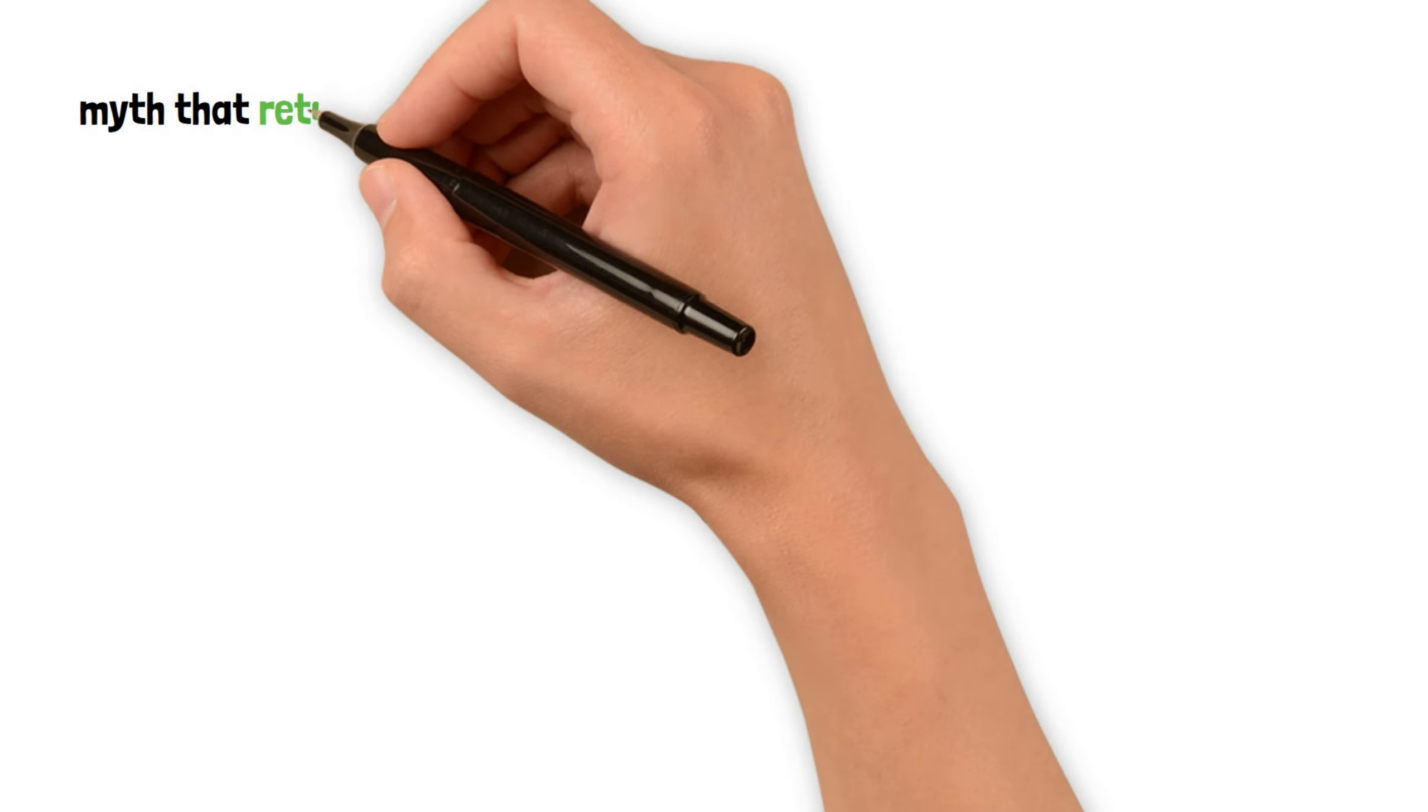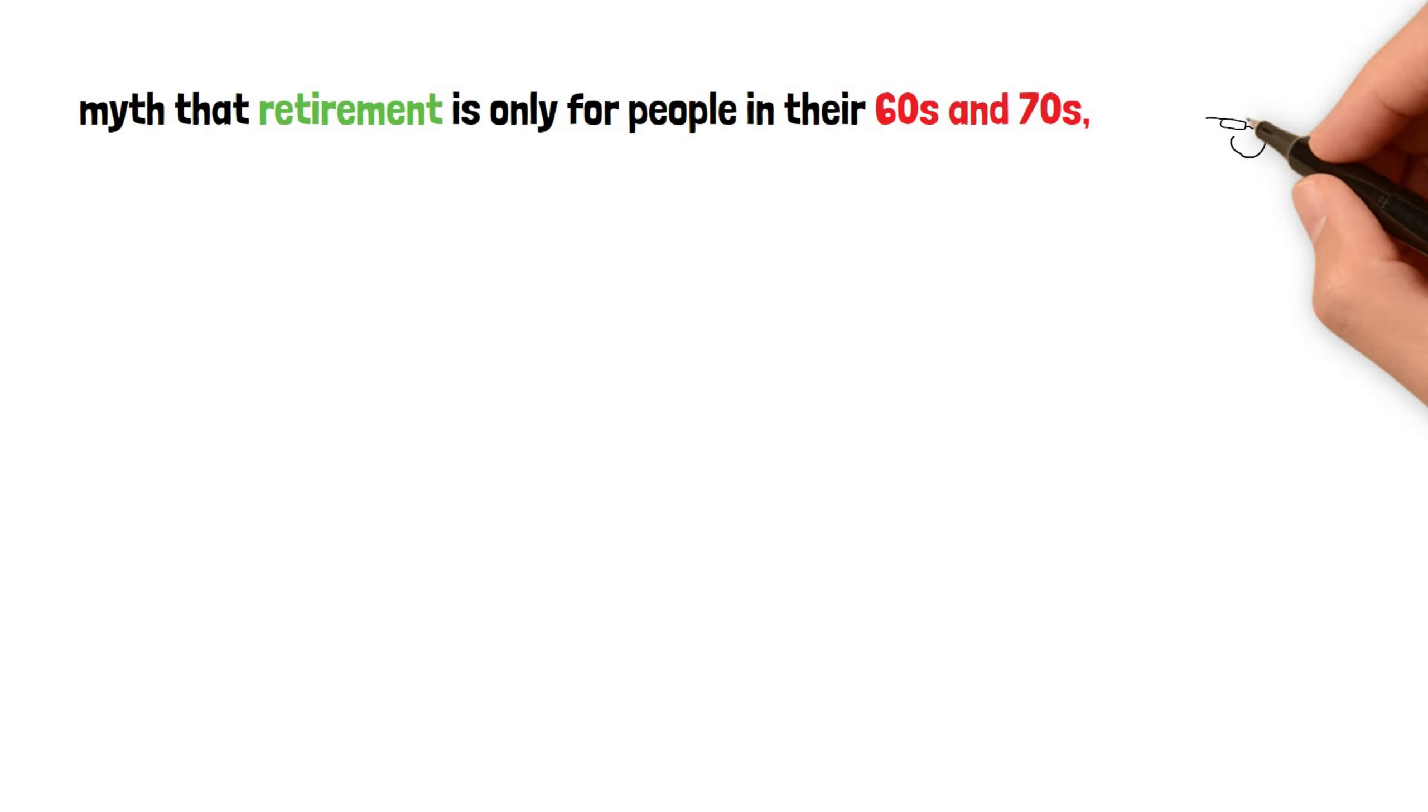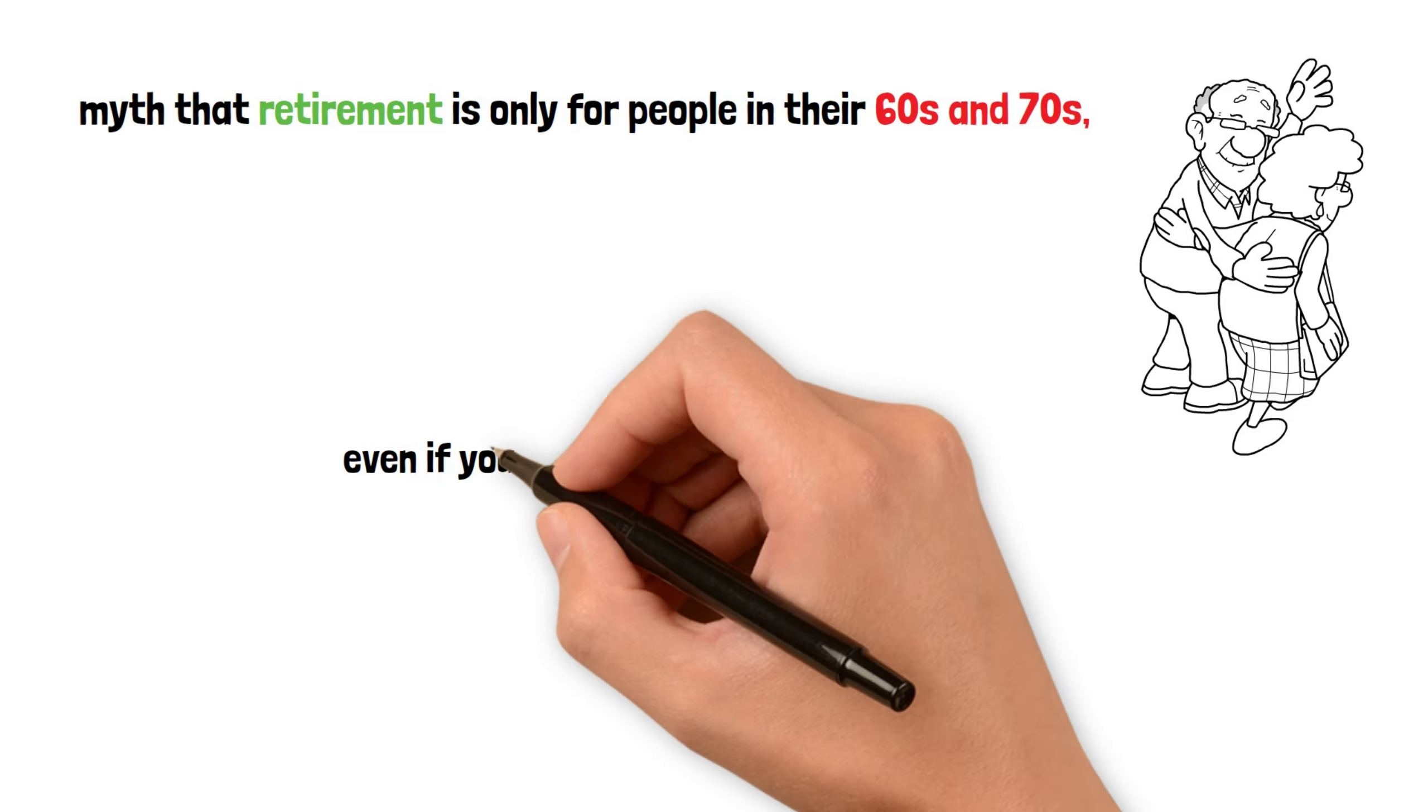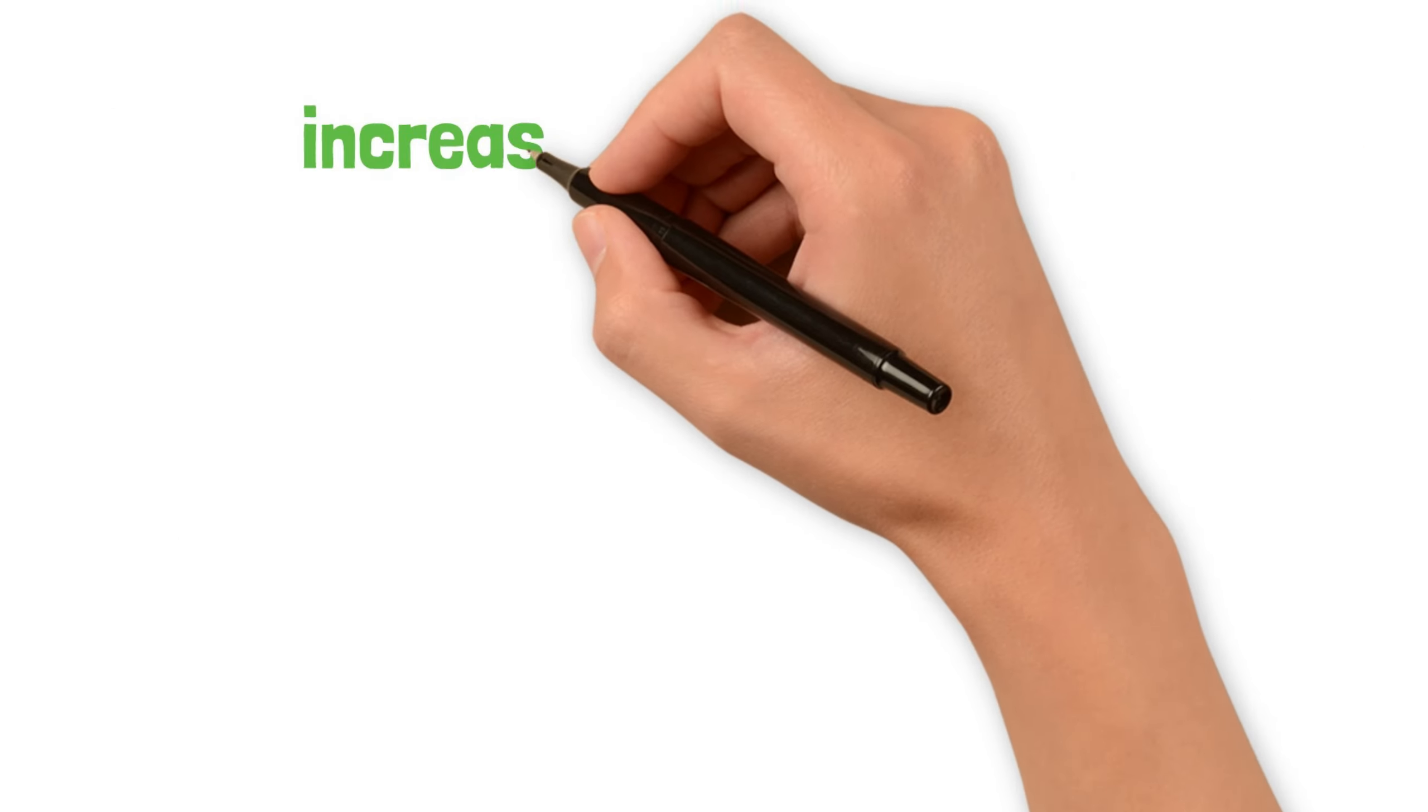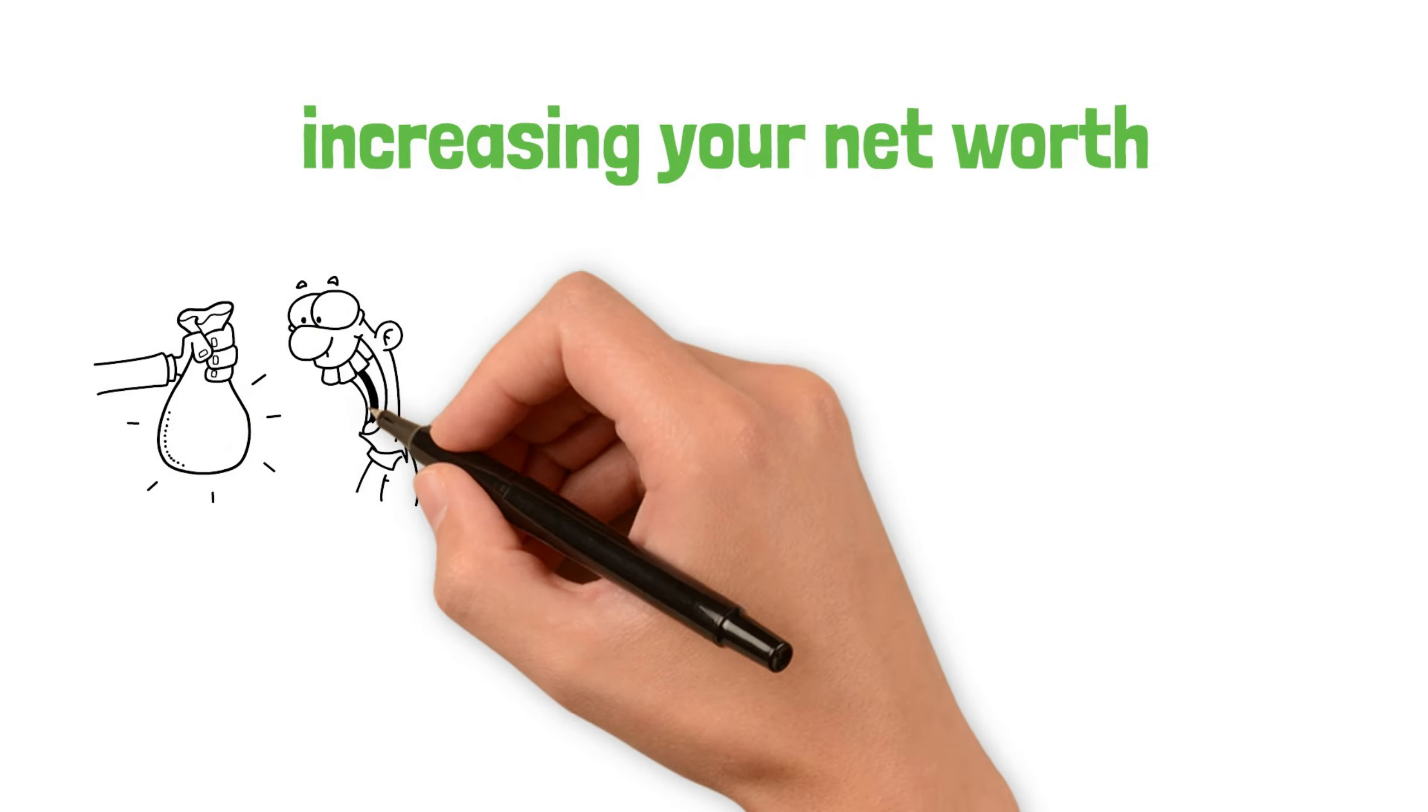So let's debunk the myth that retirement is only for people in their 60s and 70s, and go over a proven strategy that has worked for many individuals and how you can replicate it, even if you have zero dollars in the bank right now. The first step to increasing your net worth and retiring early is to understand that it doesn't matter how much money you make.